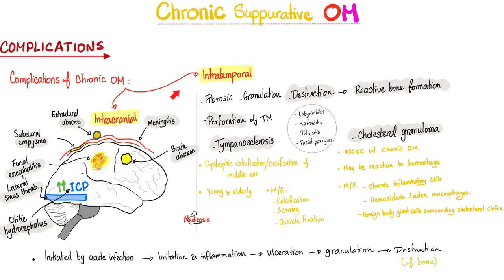Look at the ear infection spreading. It can spread to your brain or to structures outside the brain. The infection spread can lead to extradural abscess or epidural abscess, or it can lead to cerebral or brain abscess. It can lead to encephalitis, meningitis, meningoencephalitis, empyema, and much more. And this spread can lead to tons of destruction.